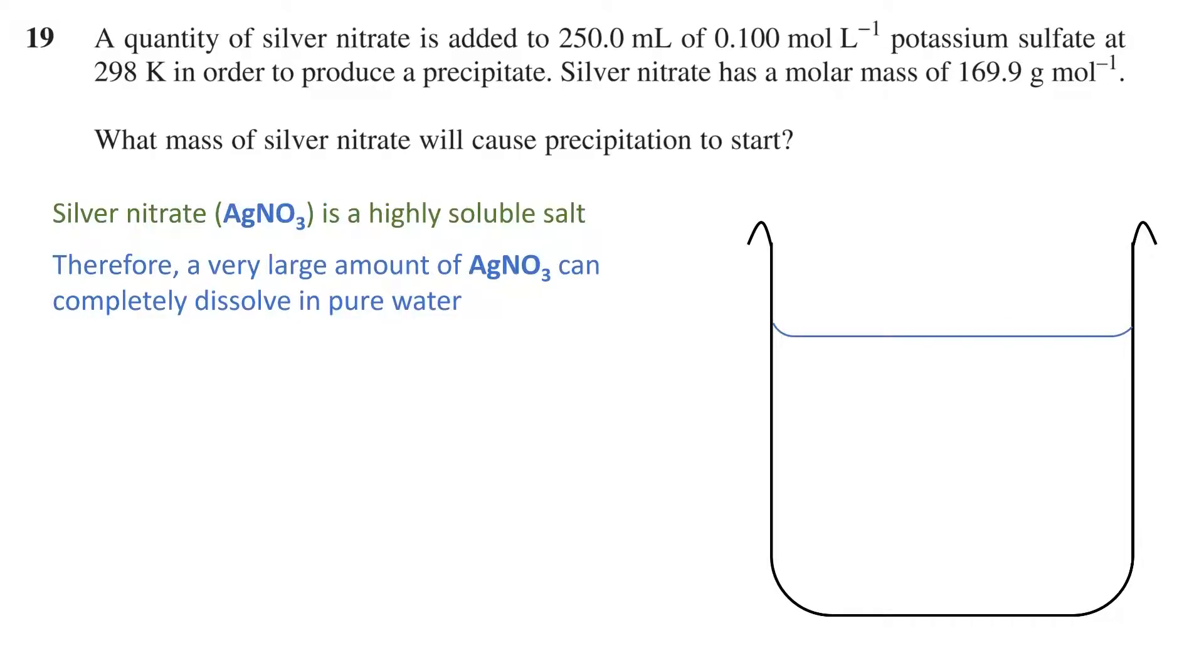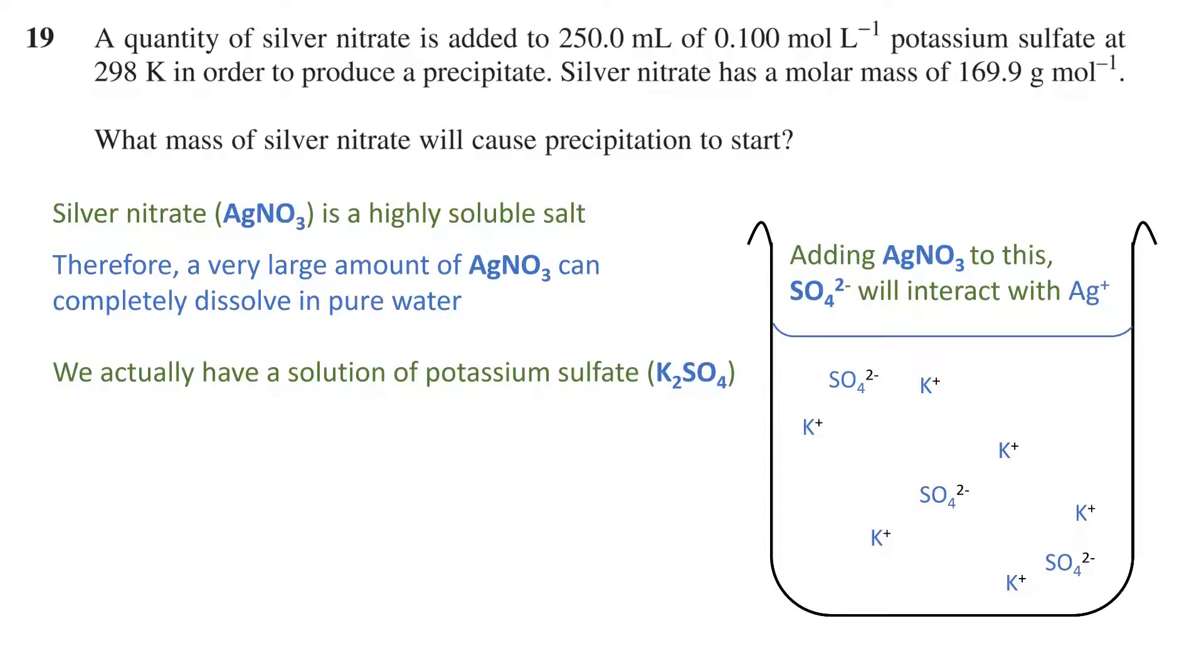We can imagine having a beaker of water and being able to dissolve a sample of silver nitrate into that water. Almost any amount we add will completely dissolve to form ions. However in this question we do not have pure water we have a solution of potassium sulfate. If we add silver nitrate to this solution the sulfate ions will interact with the silver ions.